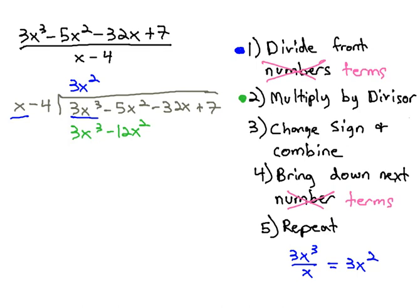That's multiplying by the divisor. Now, we're going to change the sign on each of the terms so we can combine them, making it a negative 3x squared and a positive 12x squared. The 3x cubed subtract out, and we now have 7x squared, and we're ready to bring down the next term, the negative 32x, and repeat the process.